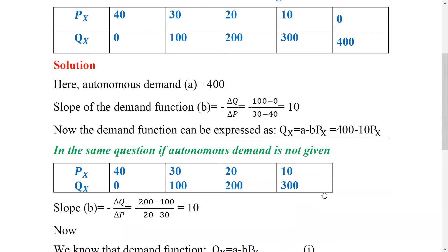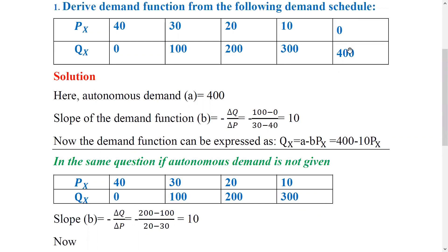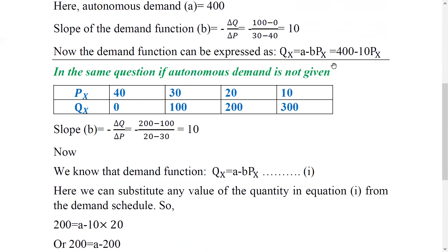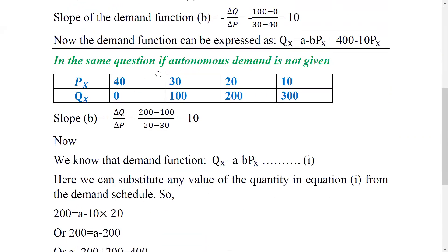Now what is the main concern in the previous case? We had zero price corresponding to 400 units, so autonomous demand was directly available at 400. This is the linear demand function where we have zero price giving us a quantity demand, with prices at 40, 30, and 20 in the schedule.